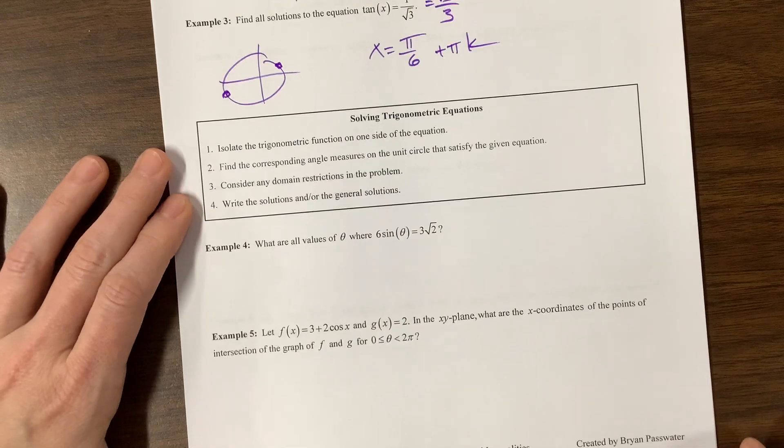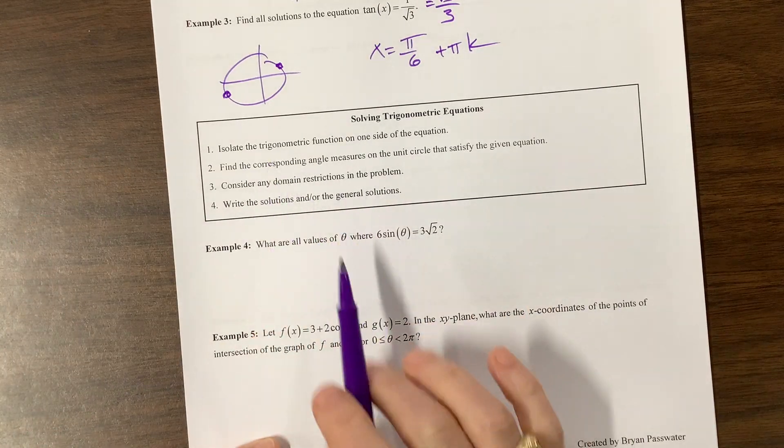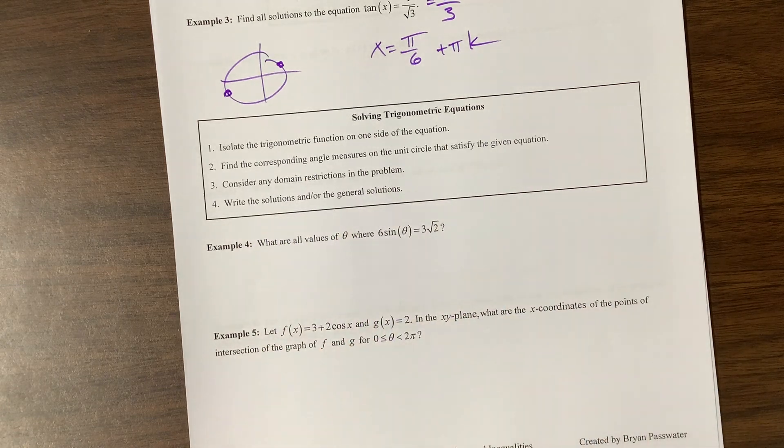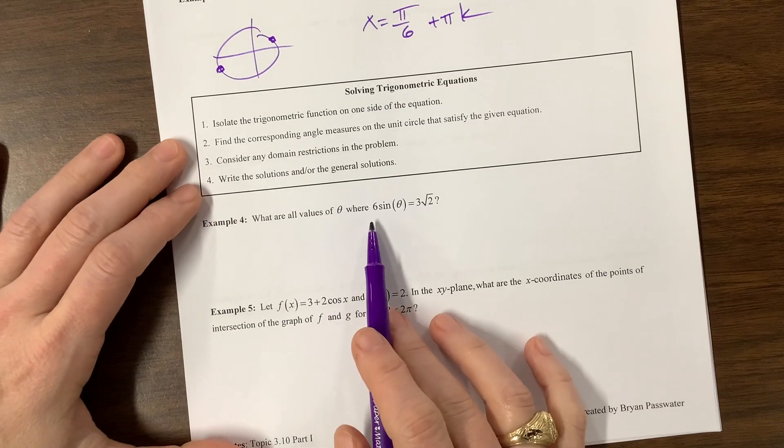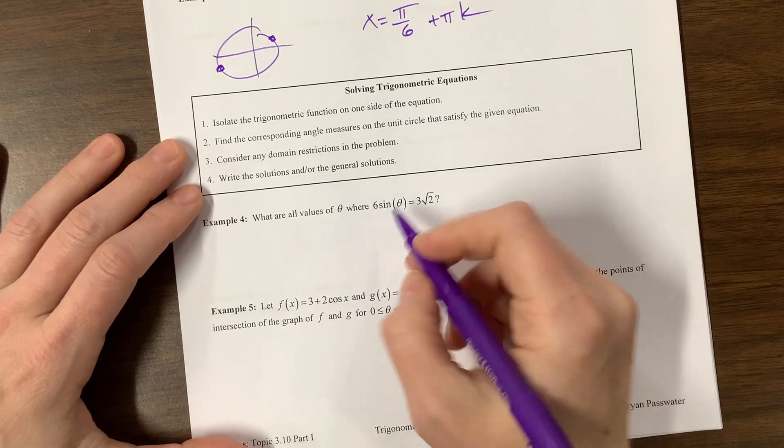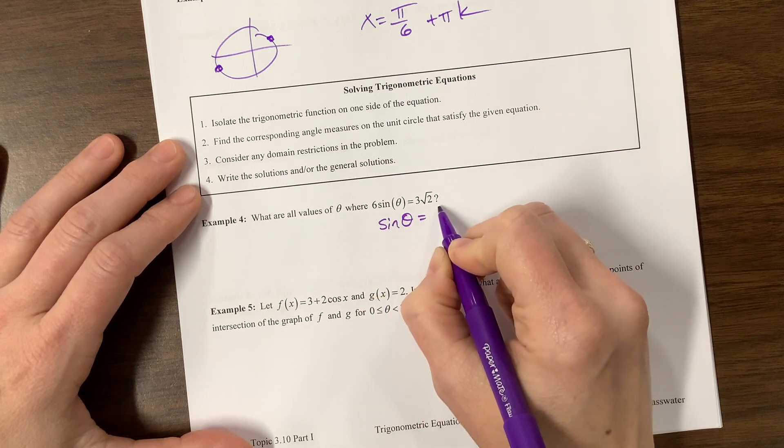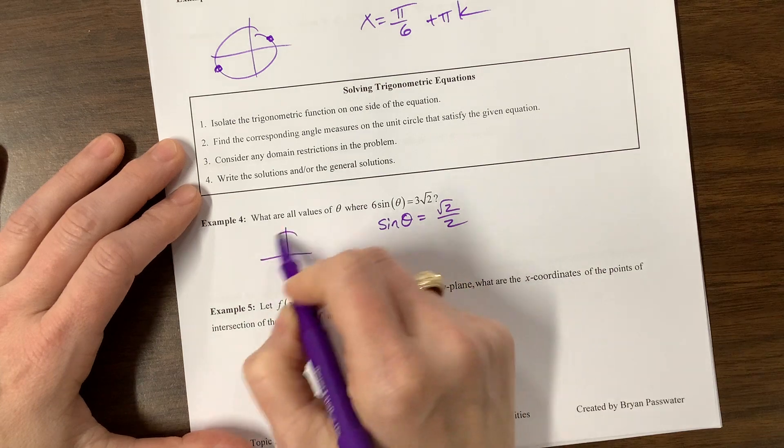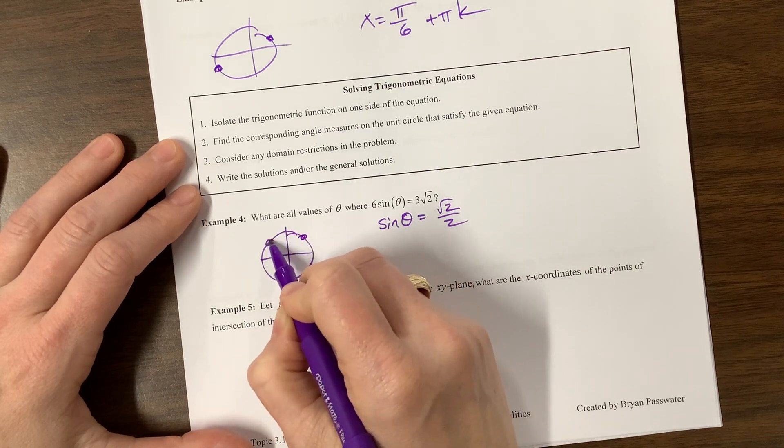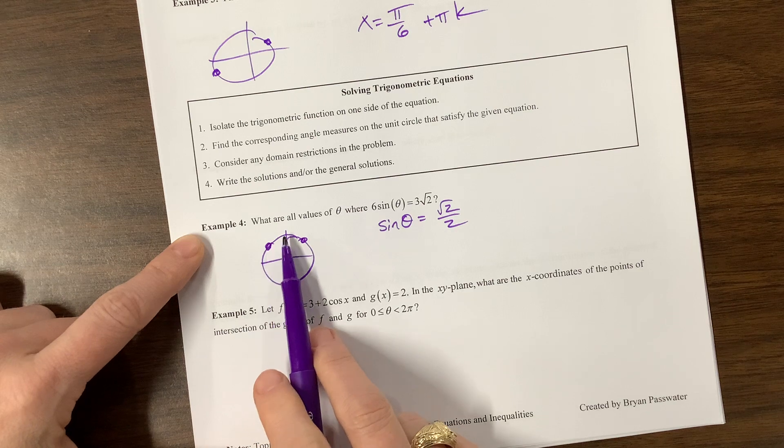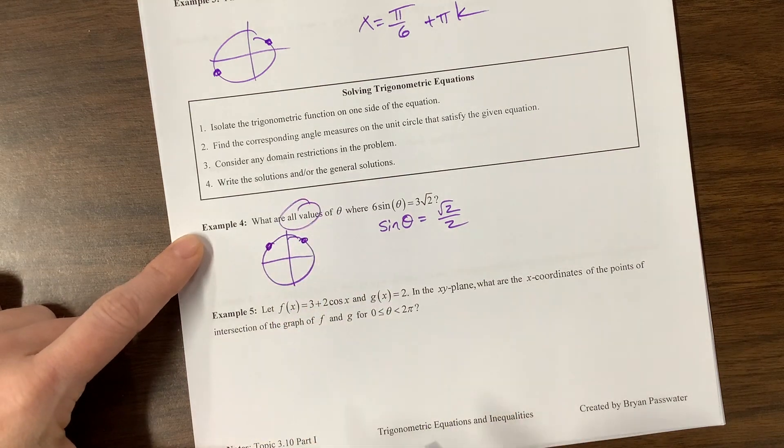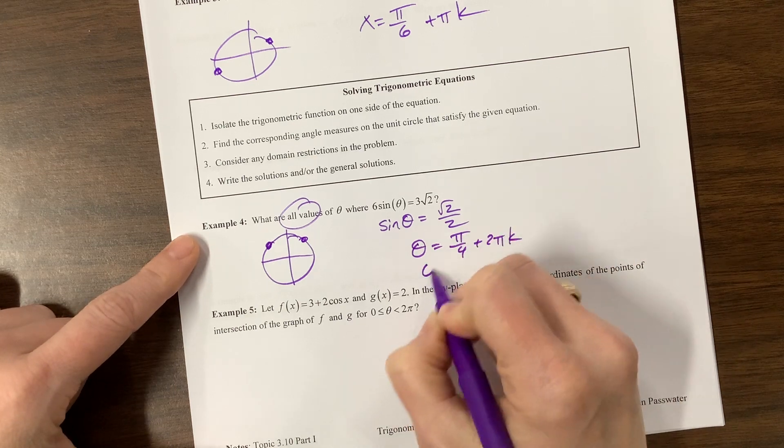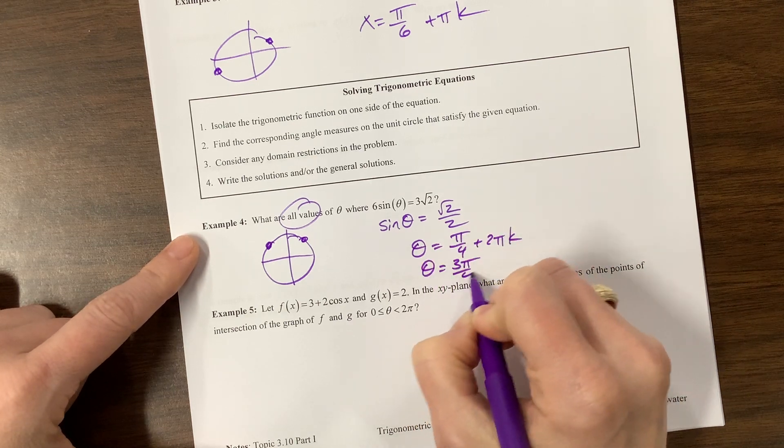Okay, solving trigonometric equations. Isolate the trig function. Find the corresponding angle measure. Consider any domain restrictions. Write the solutions and or general solutions. Very good. So we have to isolate sine, so we're going to divide both sides by 6. I have sine of theta equals, well, 3 over 6. It gives me root 2 over 2. So this is the pi over 4 family, and we're in these quadrants. What are all values? Okay, so here's what I was, I didn't catch it immediately. But so all values, it's pi over 4 plus 2 pi k, and it's 3 pi over 4 plus 2 pi k.